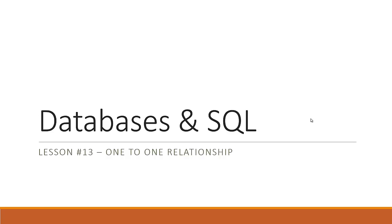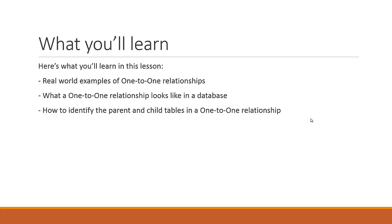Welcome to lesson number 13 of the Databases and SQL video tutorial series. This is the one-to-one relationship lesson. Here's what you're going to learn: real-world examples of one-to-one relationships in databases, what the actual one-to-one relationship looks like in a database, and how to identify the parent and child tables. It's a bit more tricky than one-to-many, where the distinction was quite obvious.